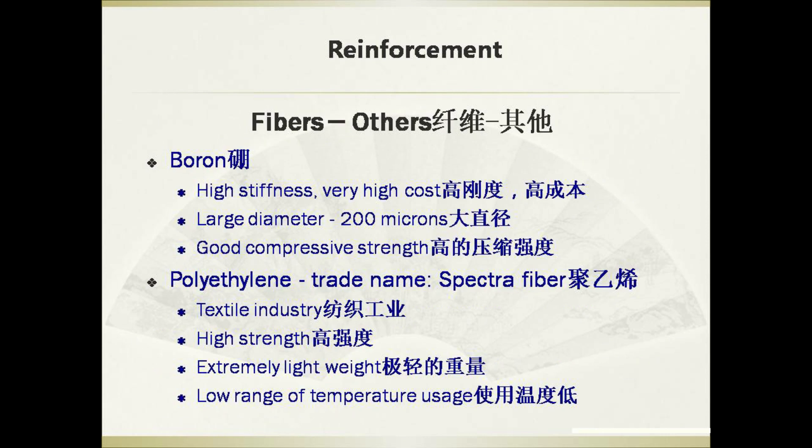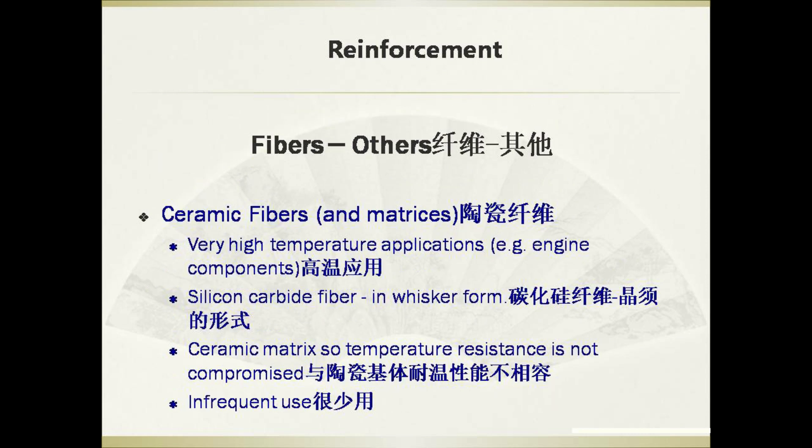Other fibers include boron, which has very high stiffness but high cost, a large diameter above 200 microns, and good compressive strength. Another fiber is polyethylene (Spectra fiber), which is applied in textile industries due to its high strength, extremely lightweight, and low temperature usage range. There are also ceramic fibers used in very high temperature applications, with silicon carbide fibers being a typical example, though they are used infrequently.